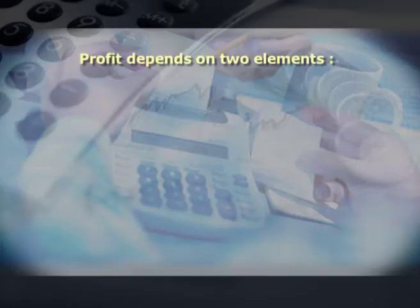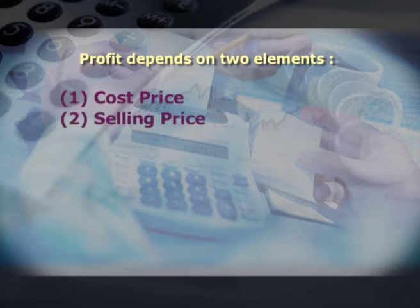Corporate returns means profit in most cases. Profit depends on two elements: first is cost price and second is selling price. Cost price simply means the price incurred for making the product, carrying the product, and promoting the product — all costs until the product is sold but without profit. If it is cost with profit, it becomes selling price.